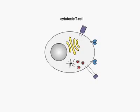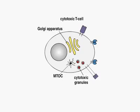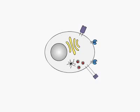Cytotoxic T-cells contain a number of cytoplasmic organelles. Some, like the Golgi apparatus and the microtubule organizing center, are common to all cells. Others, like cytotoxic granules, are found only in CD8 effector T-cells and natural killer cells.